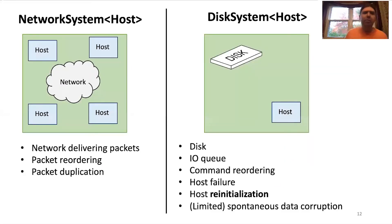So just to put it side by side, you have the network system, which deals with delivering packets, reordering and duplication. And then you have the disk system, which is sort of like a two node distributed system, but a lot of the details are different. For example, we're not going to have commands duplicated anymore between the host and the disk, although write requests can still be reordered. Now we're not just dealing with host failure, but also host reinitialization. So we can talk about persistence and recovery procedures.